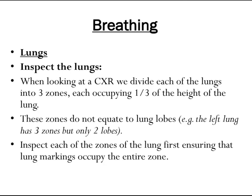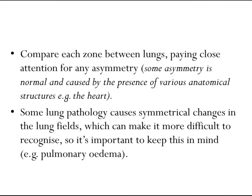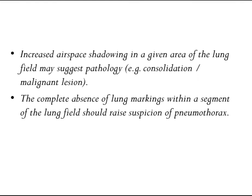B is for Breathing. Inspect the lungs — when looking at a chest x-ray we divide each lung into three zones, each occupying one third of the height of the lung. These zones do not equate to lung lobes, as the left lung has only two lobes. Inspect each zone ensuring that lung markings occupy the entire zone, and compare each zone between lungs paying close attention for asymmetry. Some asymmetry is normal due to anatomical structures such as the heart. Some pathology causes symmetrical changes, which can make it more difficult to recognize — for example, pulmonary edema.